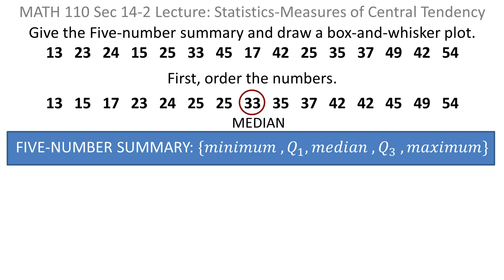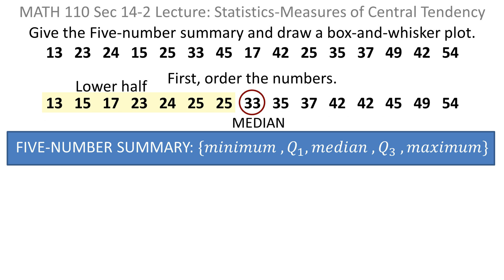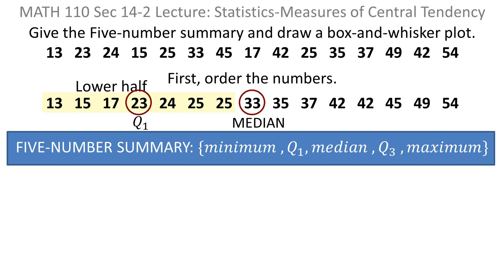Start with the median. The median is the middle value, and if you look, you'll see that the middle value is 33. Then you take the lower half of the data and find its median, and that's the first quartile value. If you do that, you'll see that the first quartile value, the number in the middle of the lower half, is 23. So that's the first quartile value.